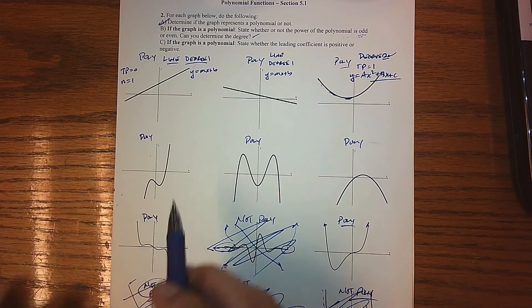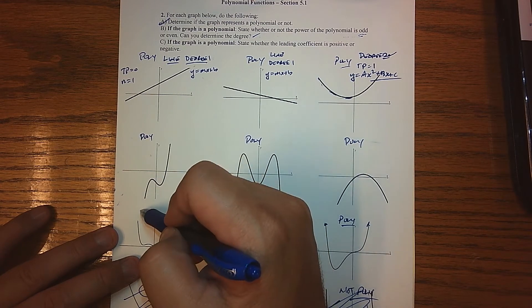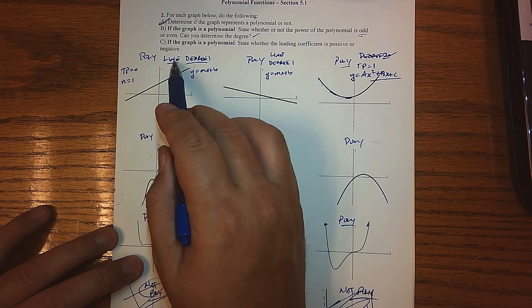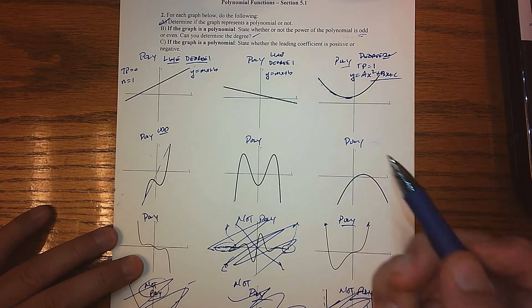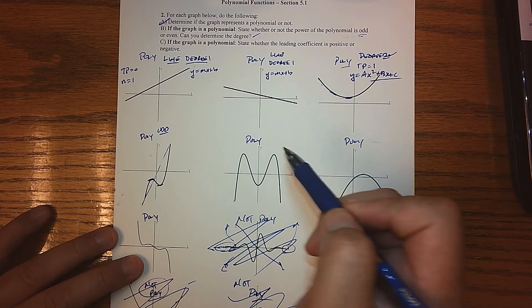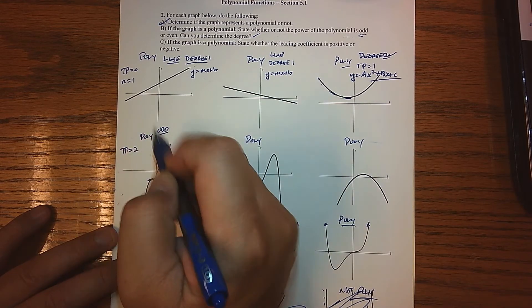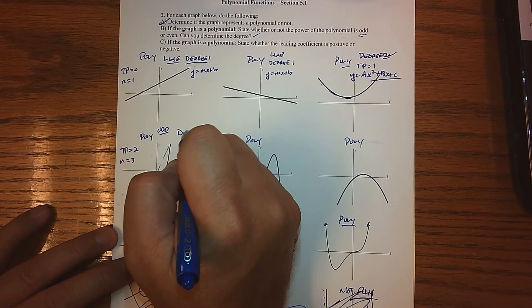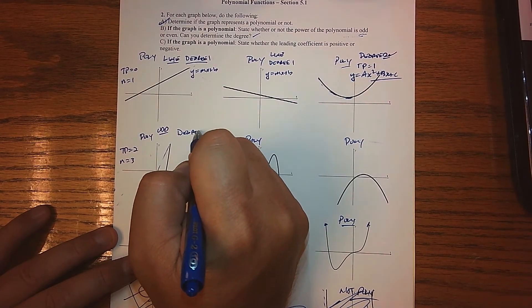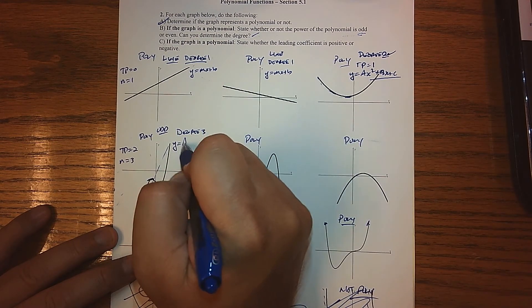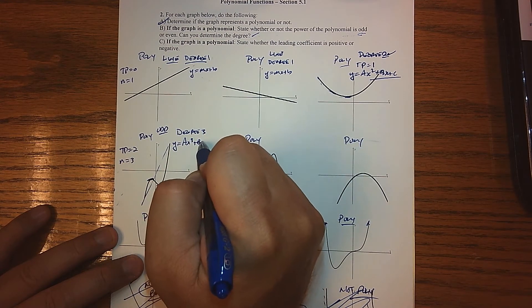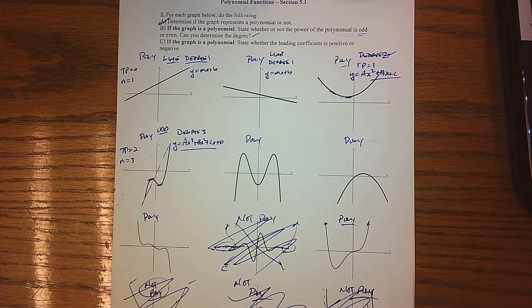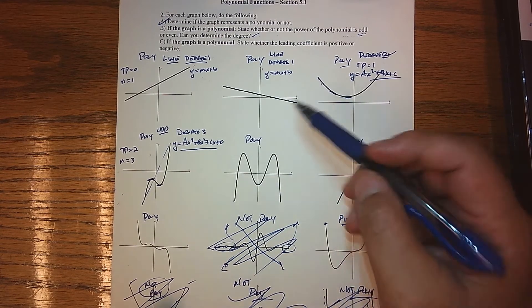Going to the next one, we know it's a polynomial. In general, it's on the way up, so it behaves like a line would, and so we have an odd polynomial here. I can see that there are two turning points. So my TPs are two, which means that n has to be at least three. So this is a degree three polynomial — something like ax cubed plus bx squared plus cx plus d. That's what basically fits that graph; it's a cubic function.